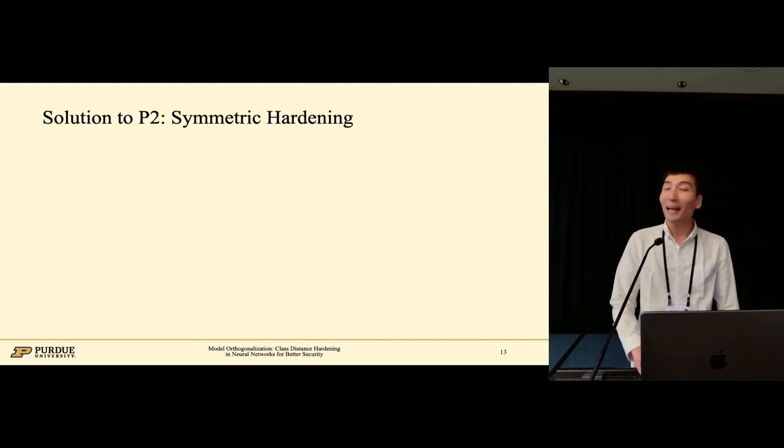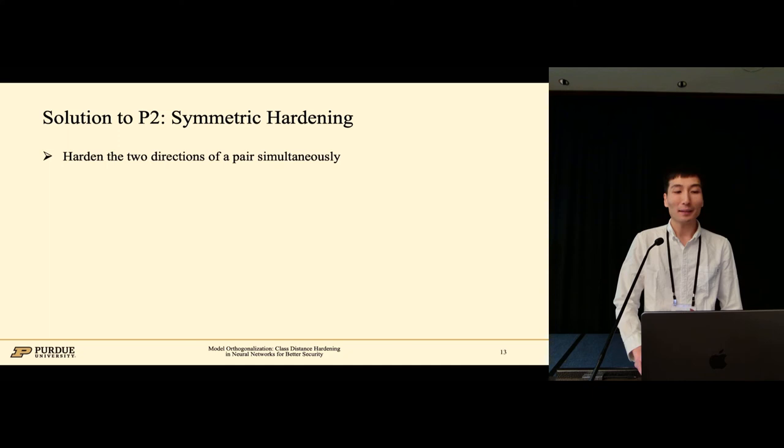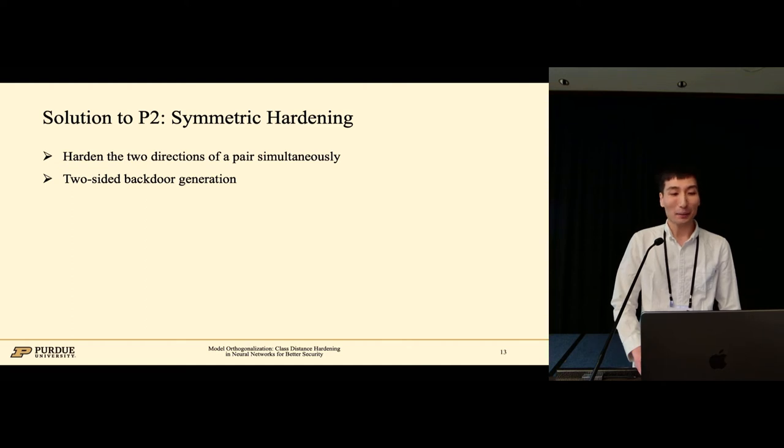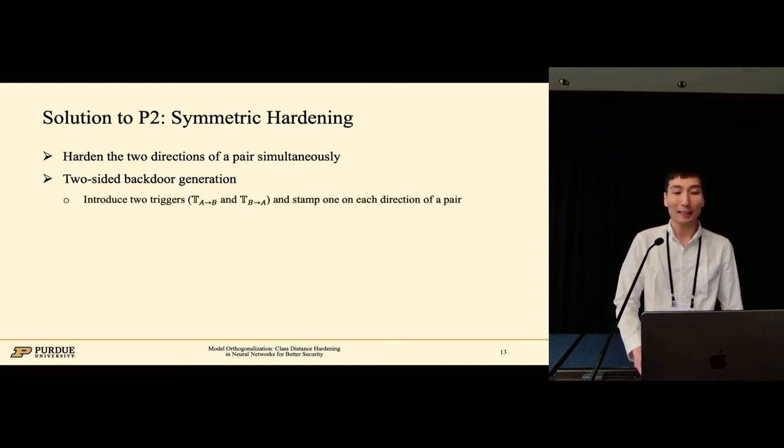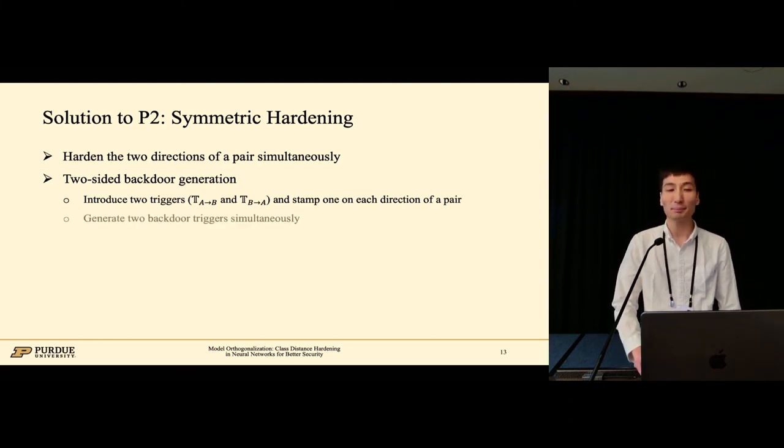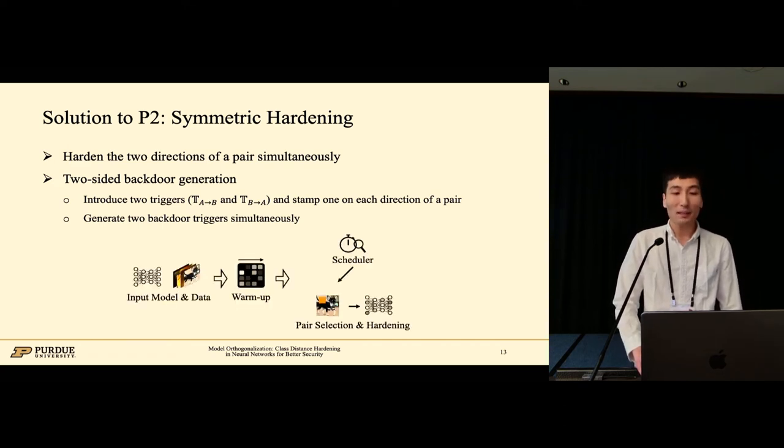We hence apply symmetric hardening which hardens the two directions of a pair simultaneously. We propose two-sided backdoor generation which introduces two triggers and stamps one on each direction of a pair. We generate the two backdoor triggers simultaneously. Backdoors for the two directions are then added for the hardening.